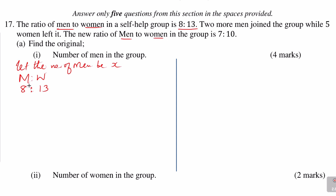Now we've let the number of men in that group to be represented by x. What about the number of women? We are going to get the number of women from x, which is the number of men. The number of men x will be obtained by working from the ratio — because 8 to 13 is the ratio of men to women, we get the number of men by taking 8 divided by 21.